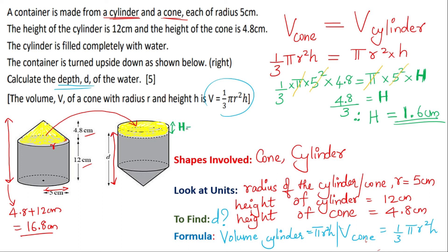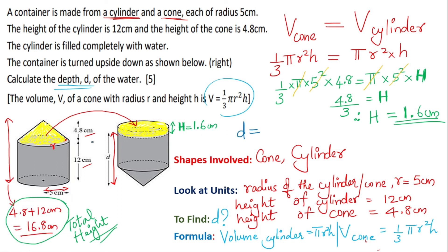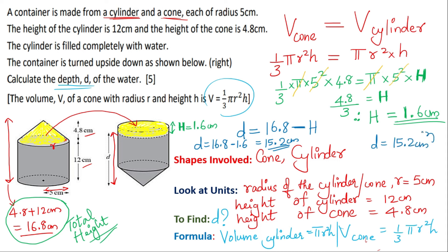So I have found the value h for this height which is 1.6 centimeters, and I know that the total height of my container is 16.8 centimeters. The value for d will be the total height 16.8 minus h which is 1.6, so d equals 16.8 minus 1.6, giving the answer as 15.2 centimeters. I hope the steps are clear — d equals 15.2 centimeters is my final answer.